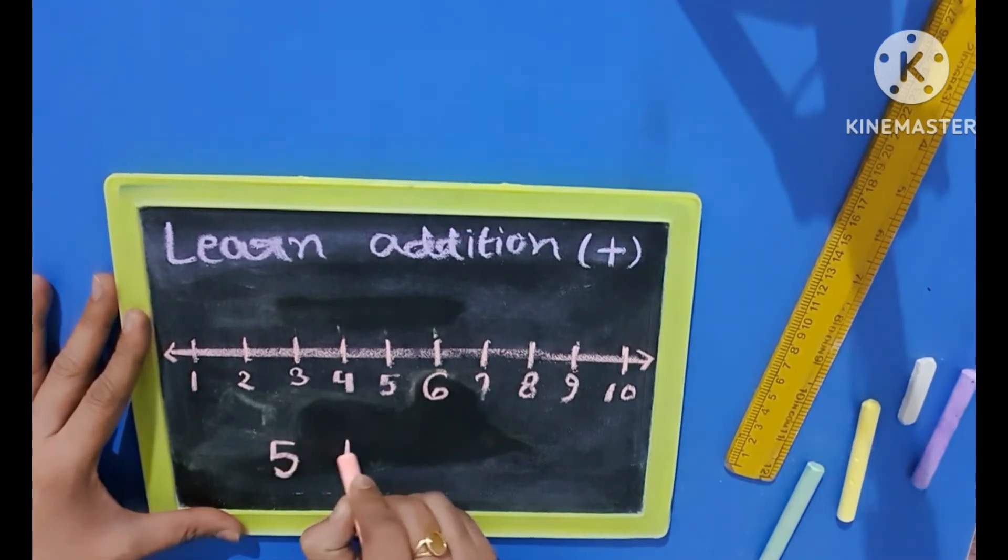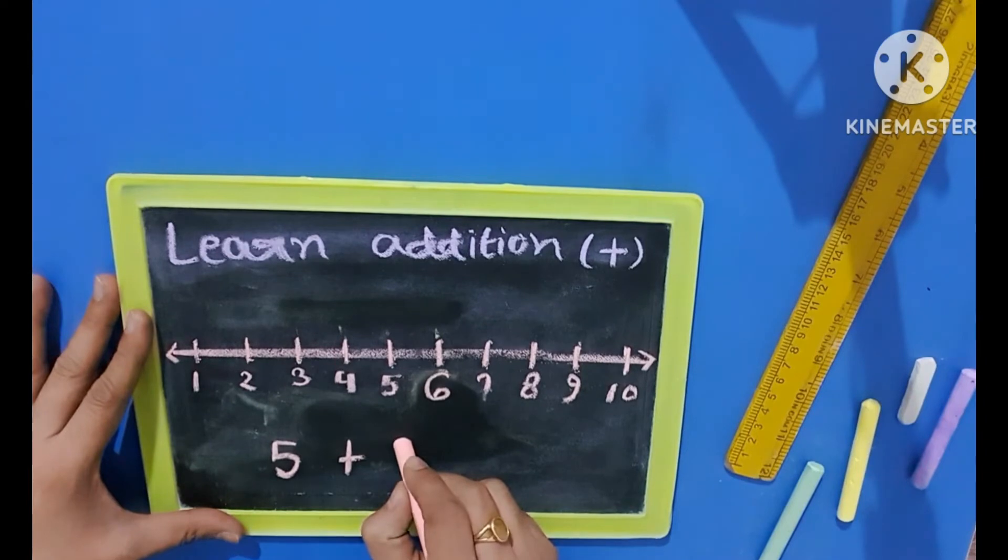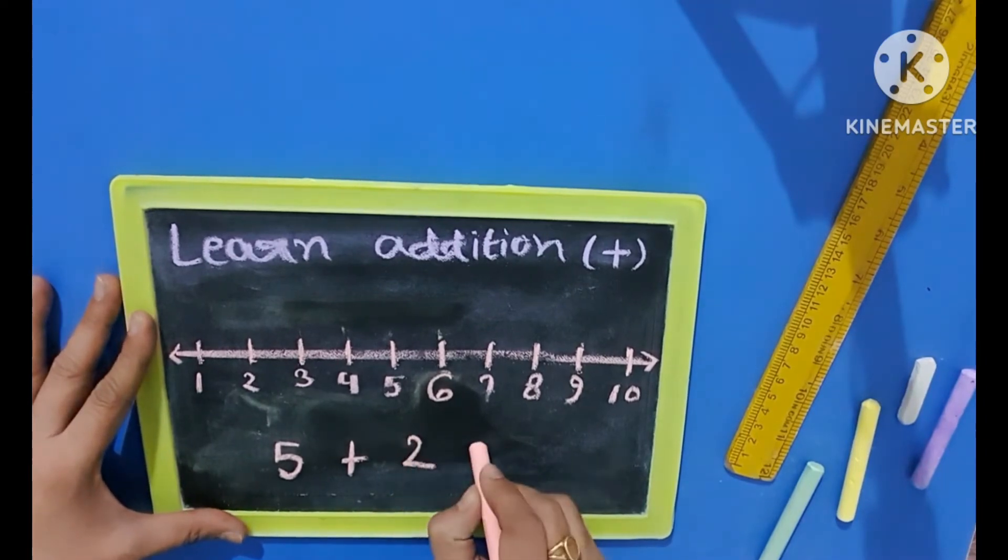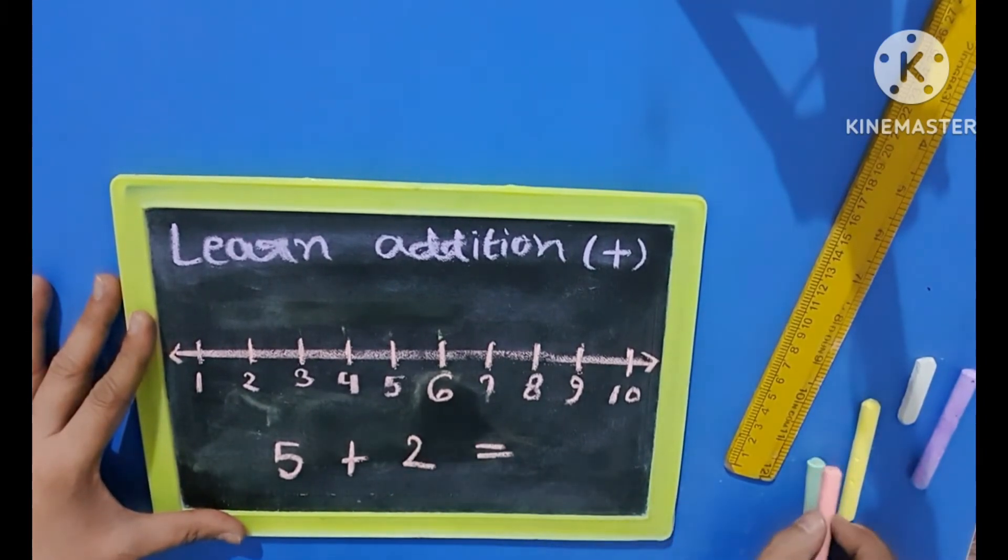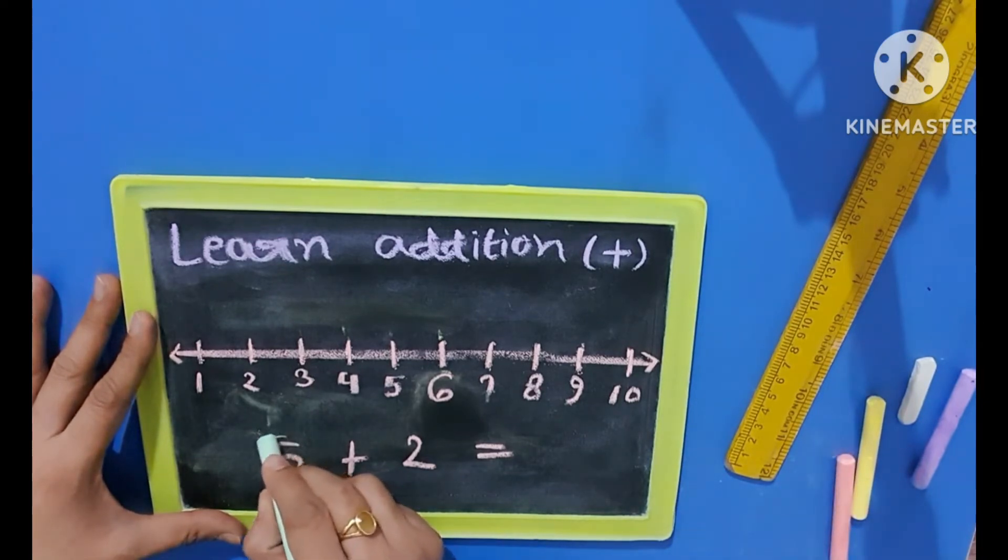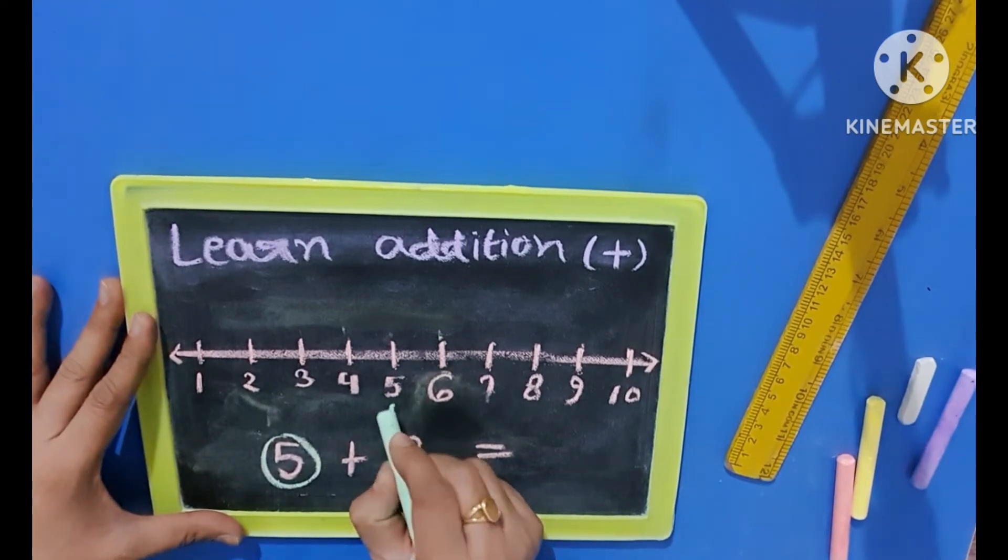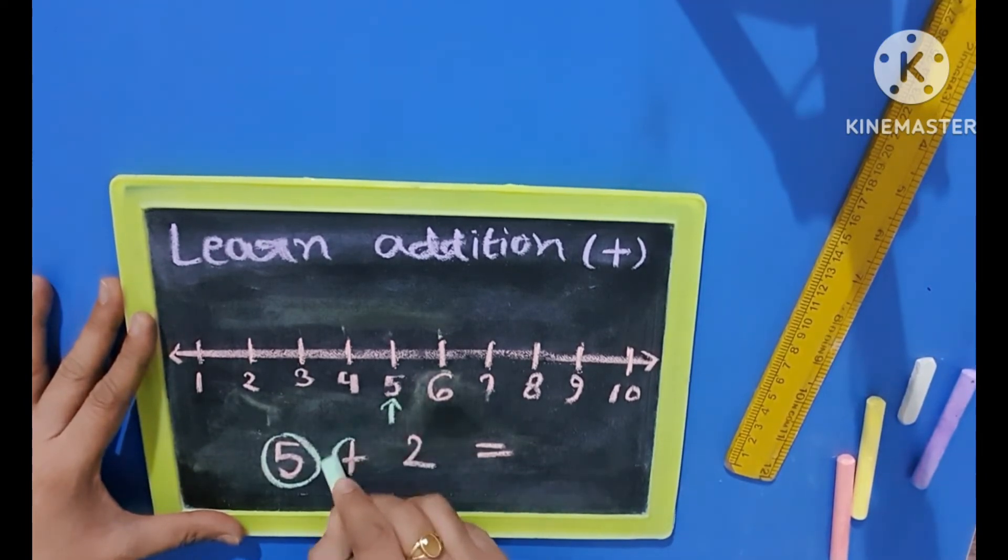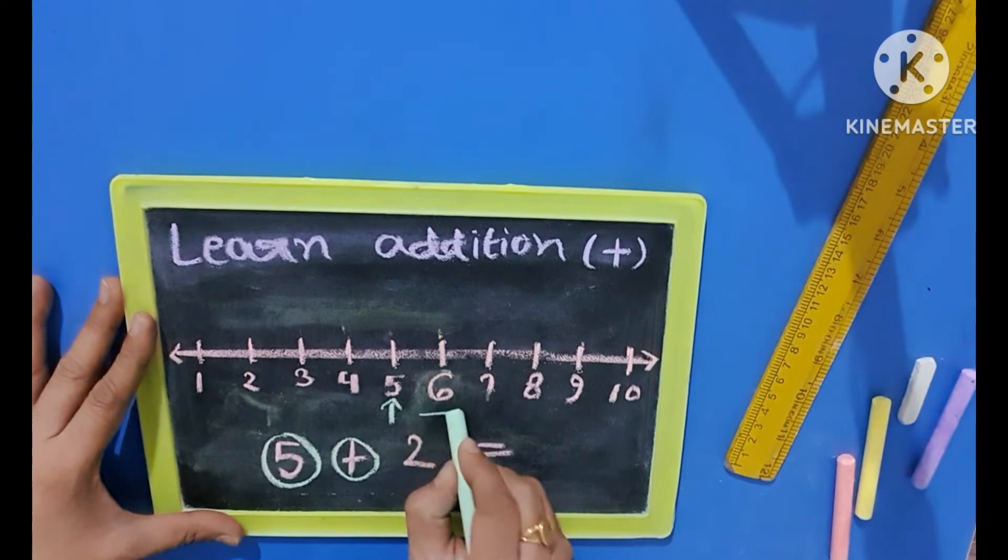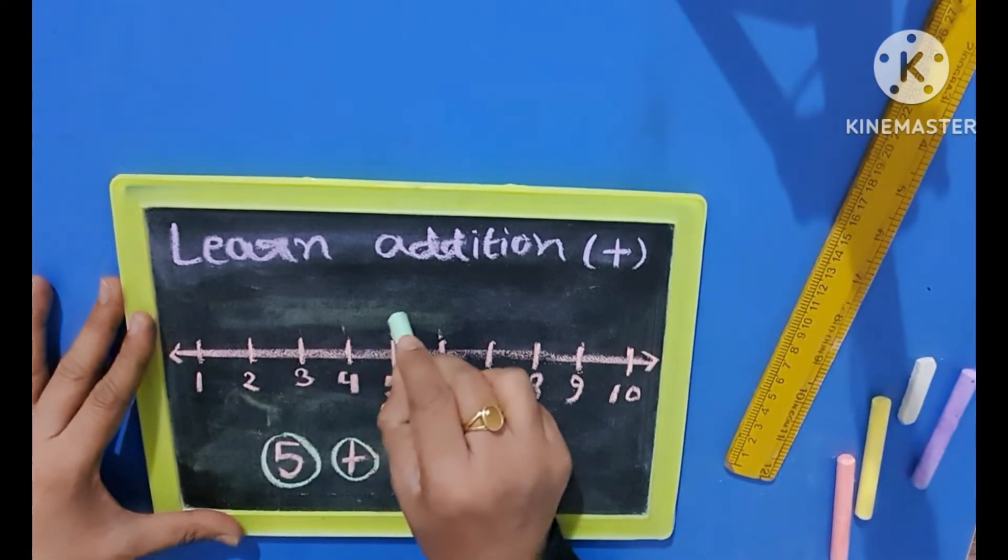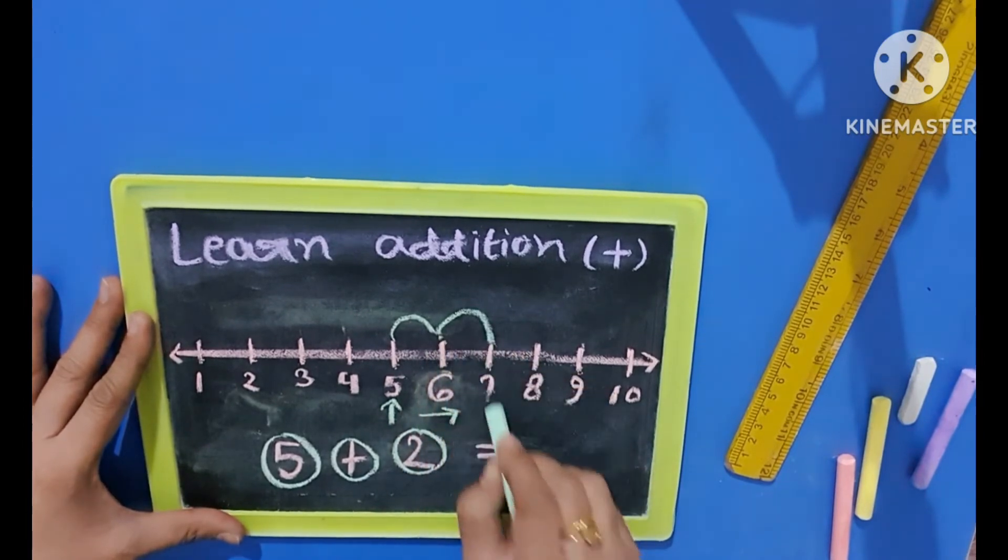Kids, now we will add 5 plus 2. And now we will identify the first number of addition which is 5. So where is the 5 in this straight line? Here, yes. Now we have to do plus so we will go in the right direction.